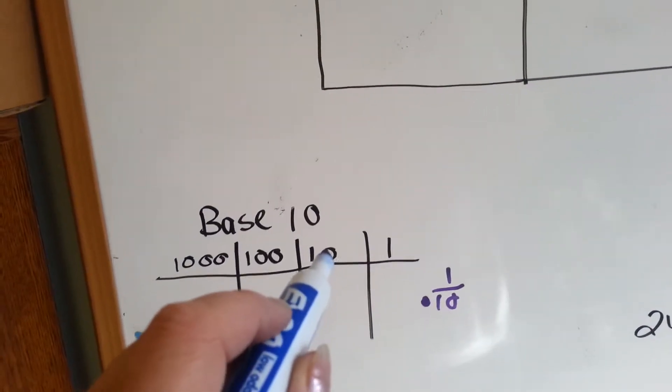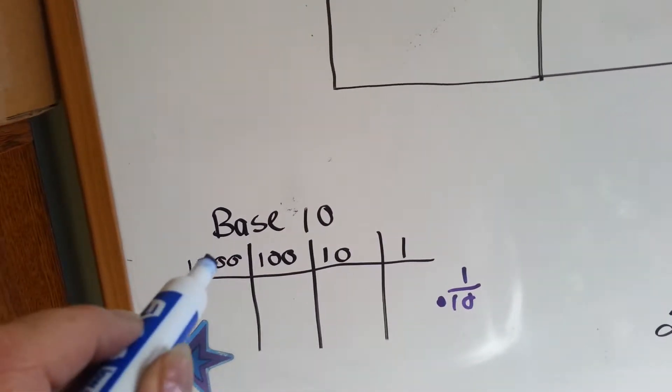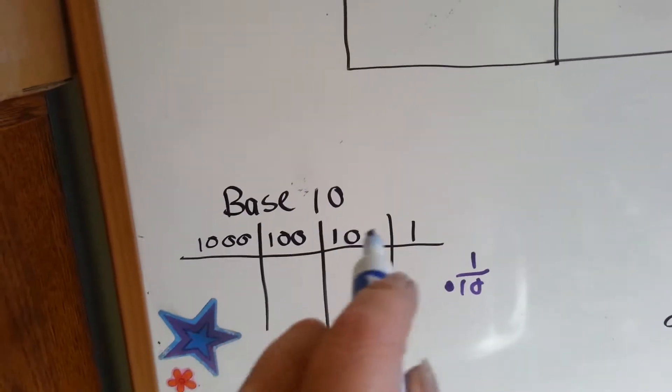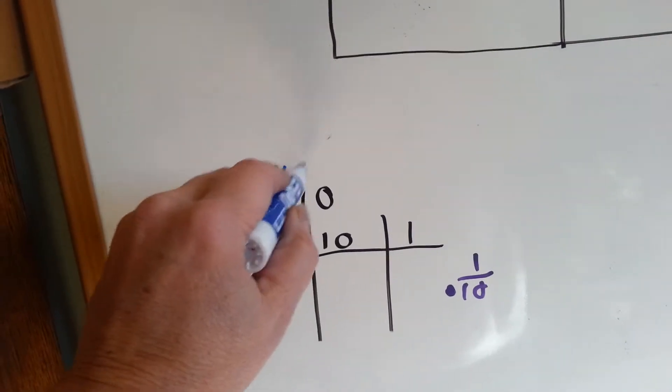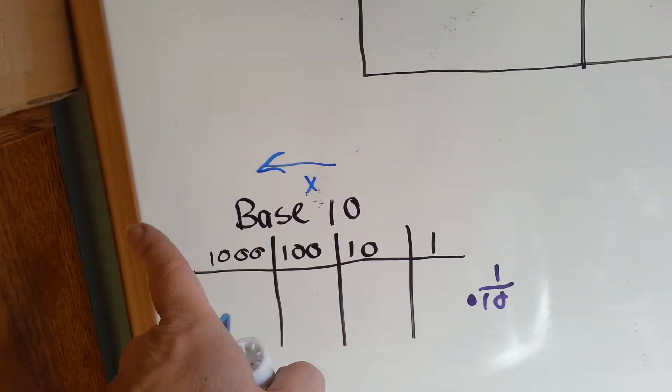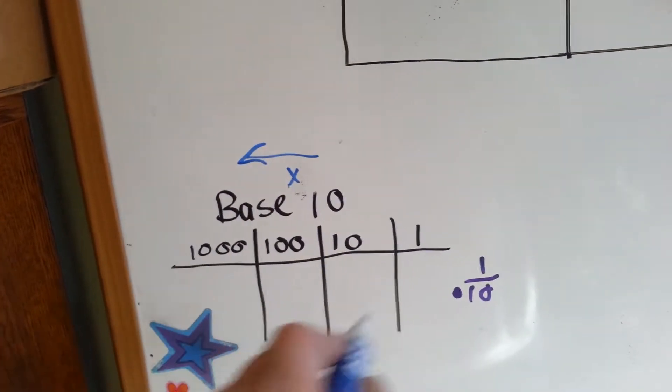Over here we have tens, then we have hundreds, then we have thousands, then ten thousands, etc. The way we get these numbers up here is we keep multiplying by ten. As we go to the left, we keep multiplying by ten.